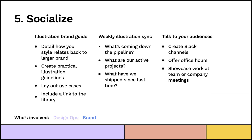Step five: Socialize. This is the step that I think we forget a lot of the time — we do all the beautiful work, we make things, we document, and then we don't tell anybody. Having an illustration brand guide — that might be part of your brand guide or separate depending on how you're organized internally — can detail how the style relates back to the larger brand. Why did you make the aesthetic choices you did? How does it relate back to your mission and principles? Create practical guidelines: it's a stroke, it's charcoal, it's two pixels, no other things. It's much easier than hoping people will figure it out. Detail things that are concrete, layout use cases for how to use and not use illustrations, and include a link to your library in that brand guide.